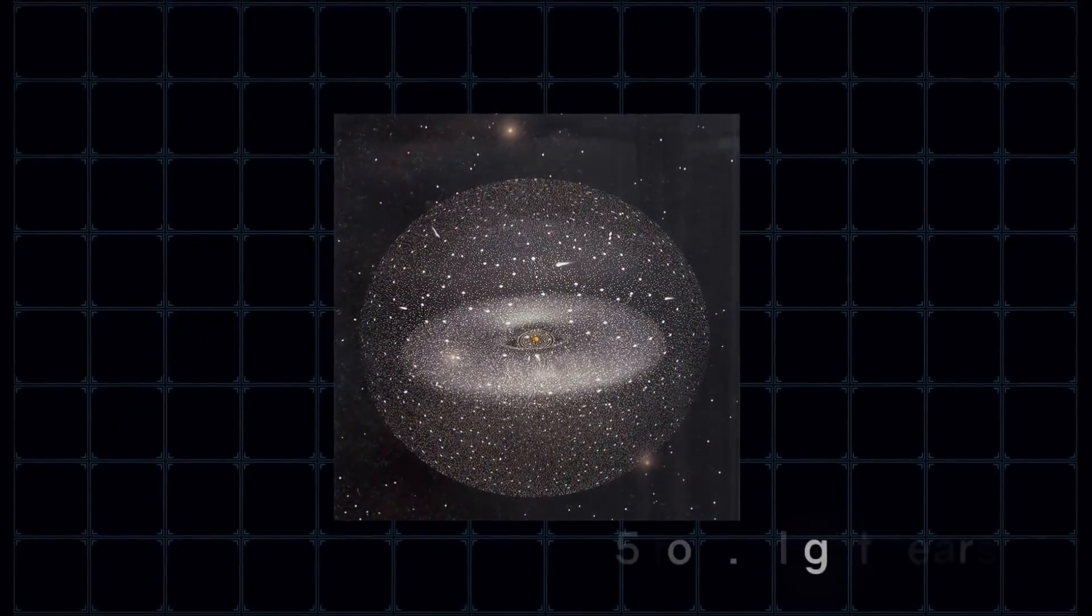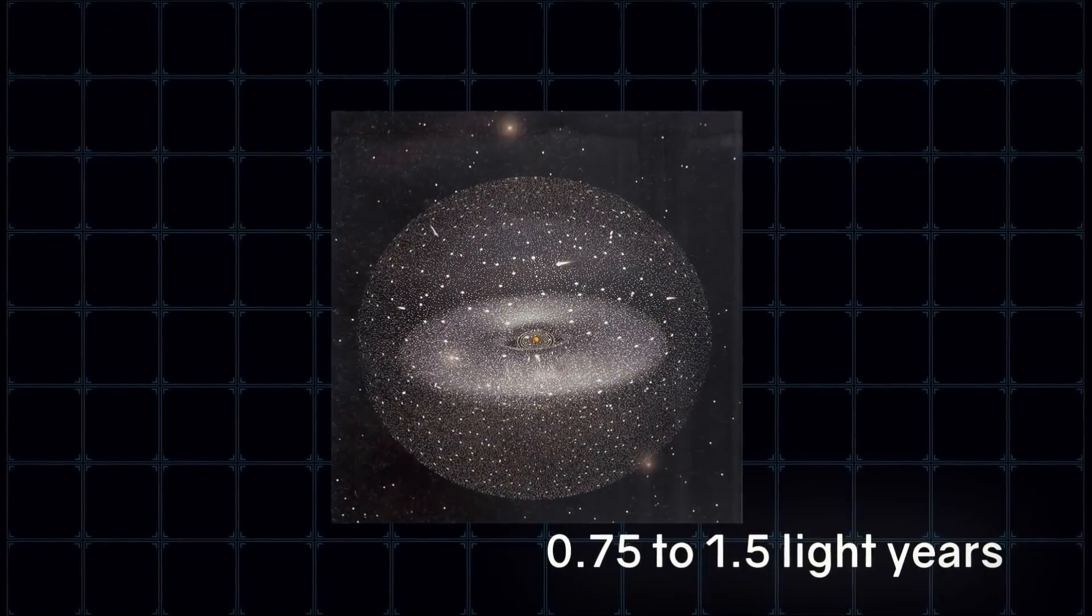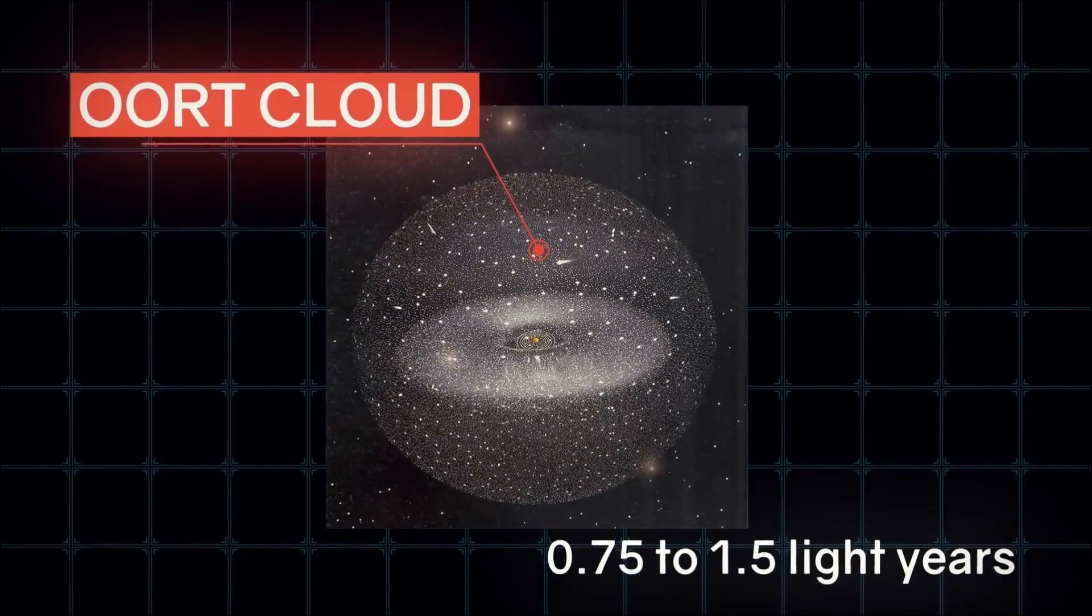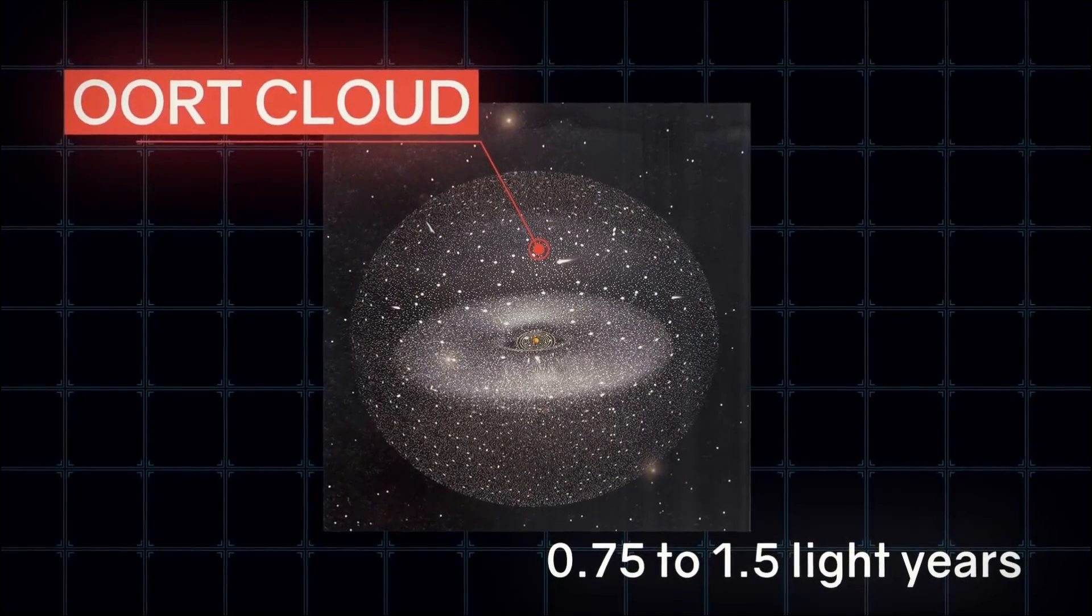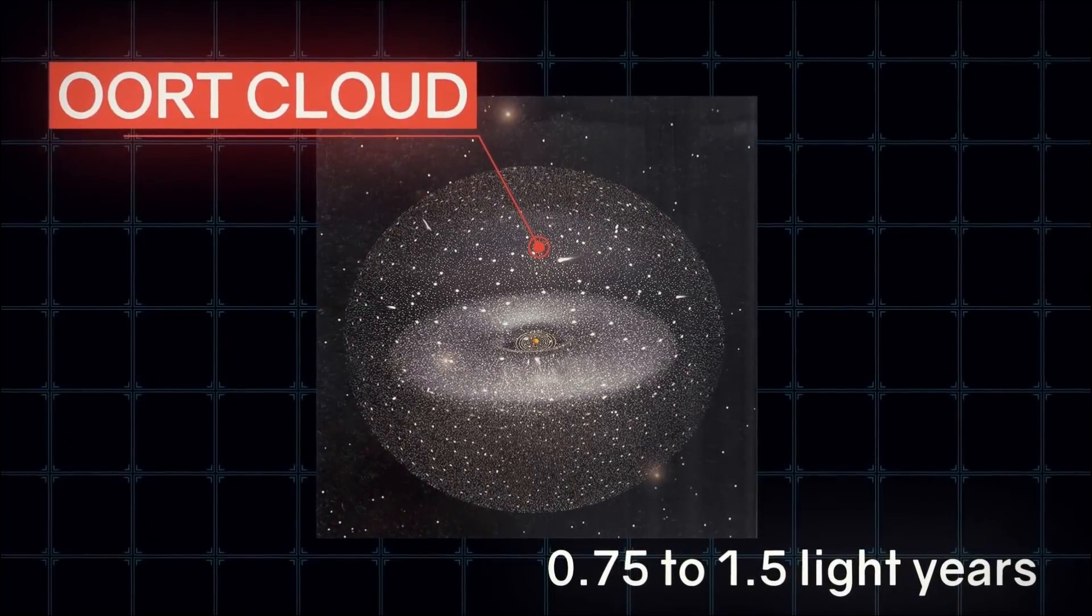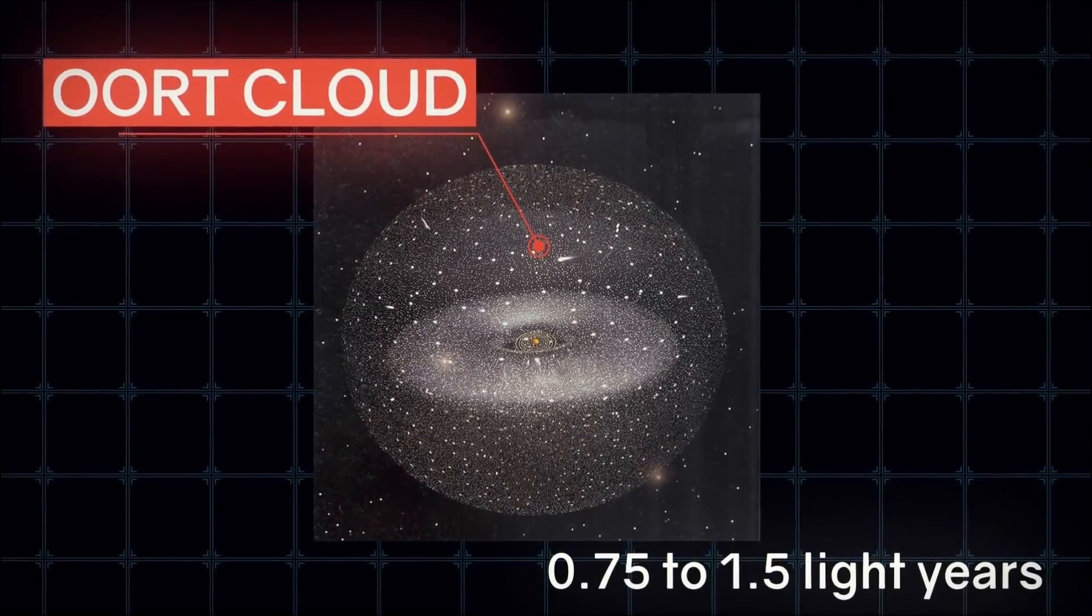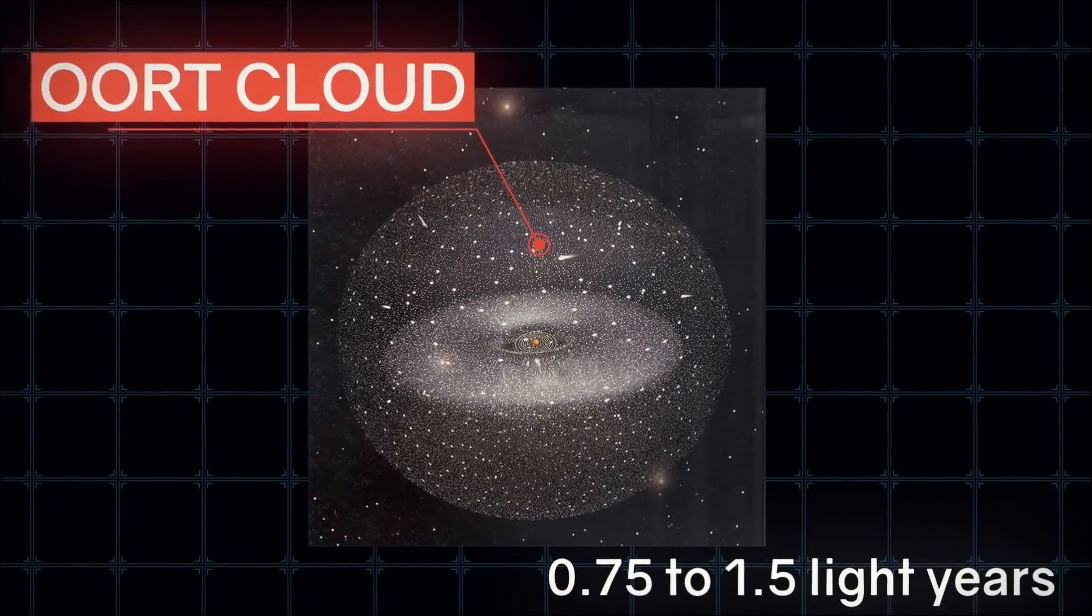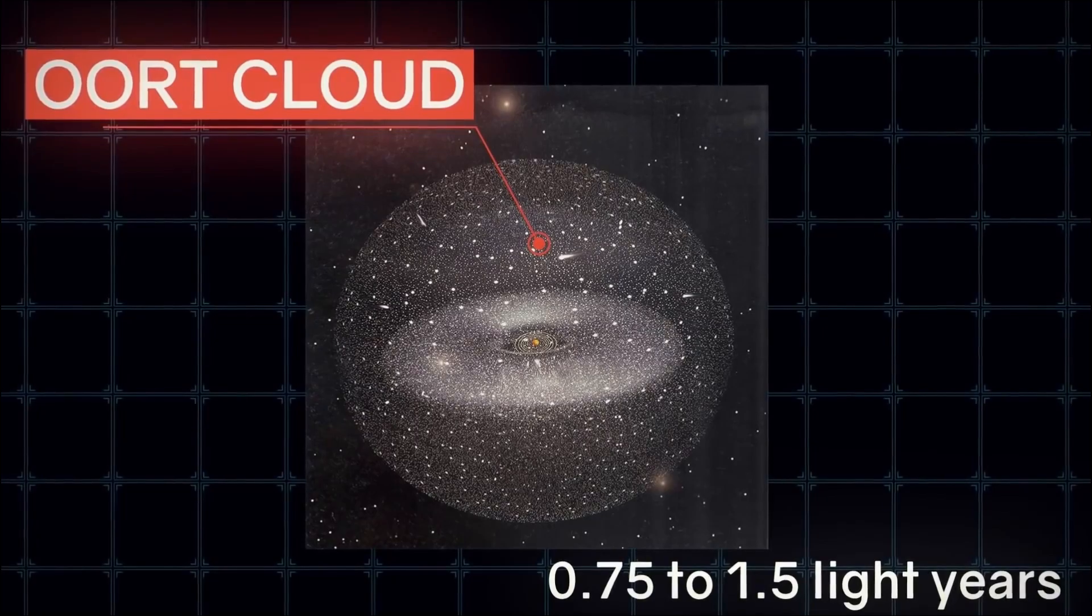And behind this jam, at a distance of 0.75 to 1.5 light-years, the Oort cloud spreads. A spherical cloud of ice objects, up to a trillion, which serves as a source of long-period comets. The interstellar wind already dominates here, but the Sun is still holding bodies in its gravitational field with its last strength.